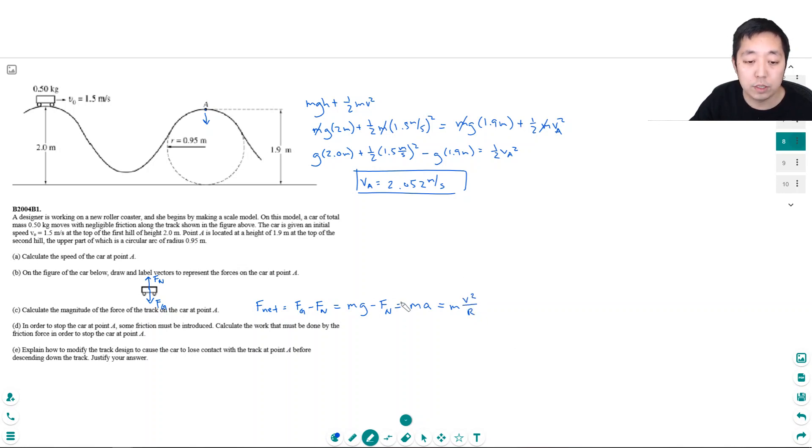So now I can solve for the normal force. It's equal to mg minus m v squared over r. And I just plug stuff in.